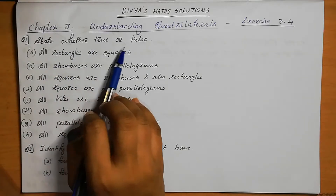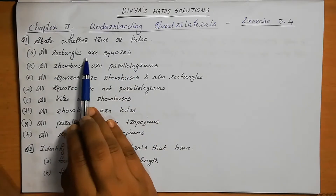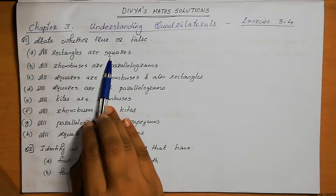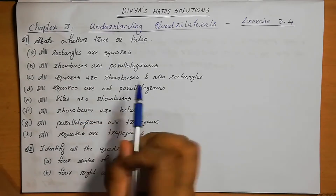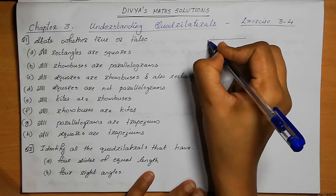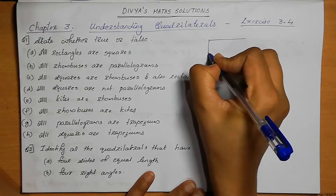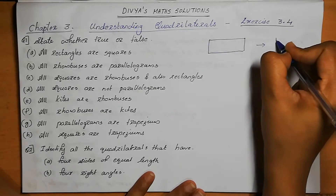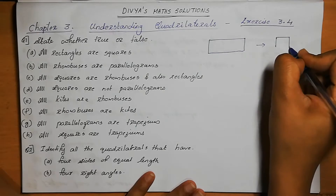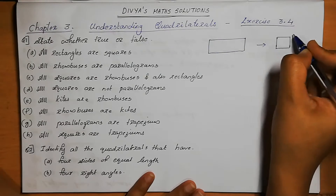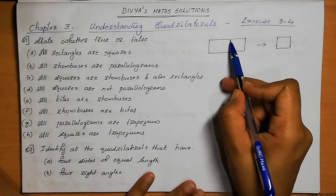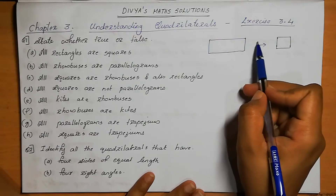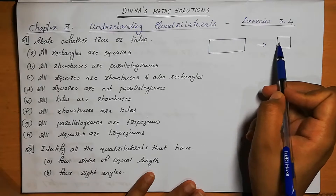State whether true or false. All rectangles are squares. Is this possible or not? Rectangle means opposite sides are equal. Square means all four sides are equal. So opposite sides being equal means that is a rectangle, and all rectangles being squares is not possible.